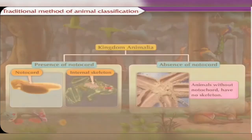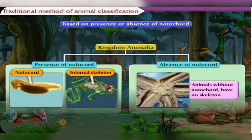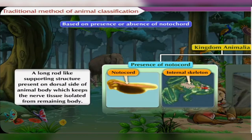The traditional method of animal classification was based on the presence or absence of a notochord — a long, rod-like supporting structure present on the dorsal side of the animal body, which keeps the nerve tissue isolated from the remaining body.